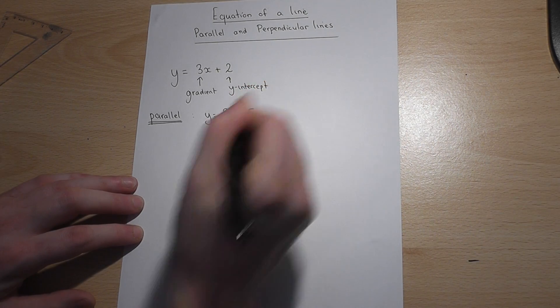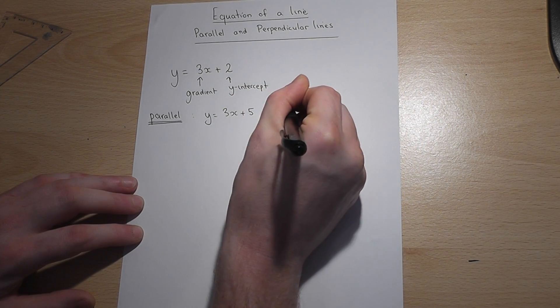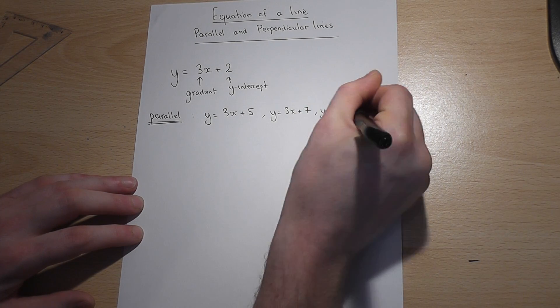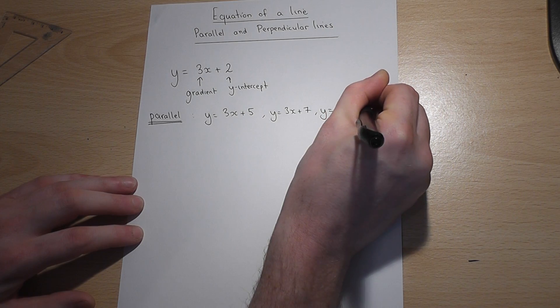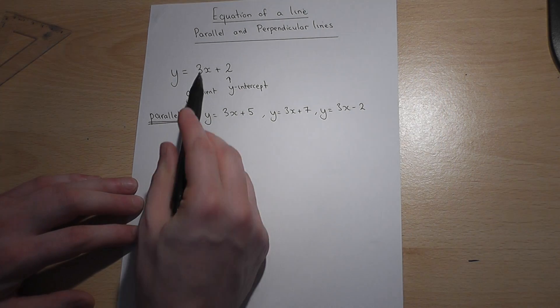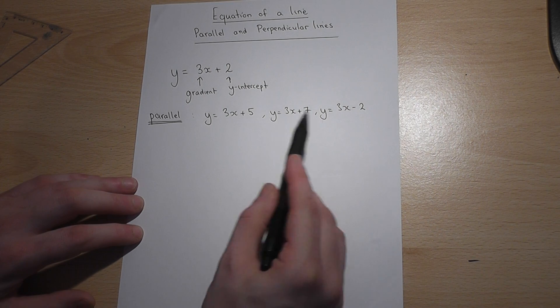So here's an example of another parallel line. Here's another one and here's another one. These are all parallel because they all have the same gradient.